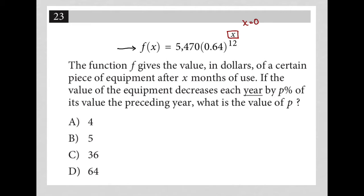For us, if this exponent were zero, I'd have 0.64 to the zero power. Anything to the zero power is just one. Then I'd have 5,470 times one, which means f of zero — whatever x represents — is going to equal 5,470.